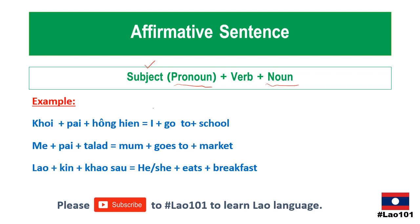I give you the example here: 'koi bai hong hian' — 'koi' means I, 'bai' means go, and 'hong hian' means school, so 'koi bai hong hian' means I go to school. The second sentence: 'mae bai talat' — 'mae' means mom, so mom goes to the market.